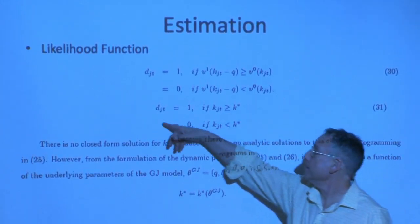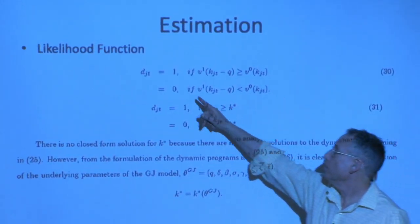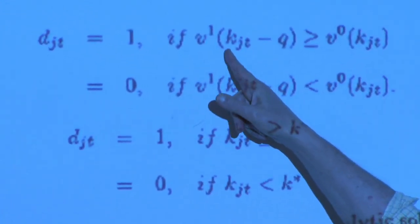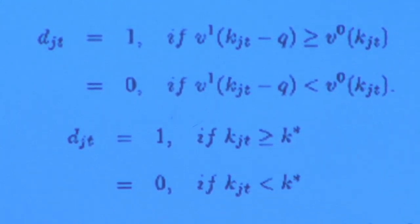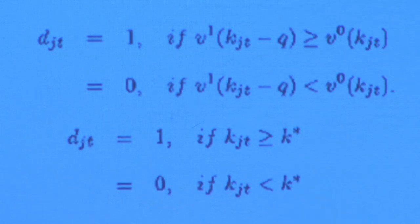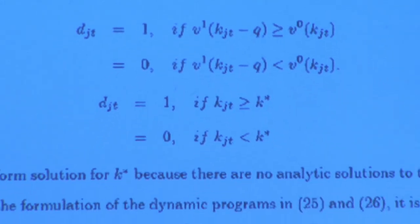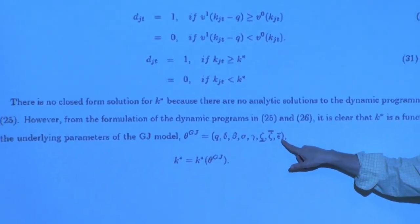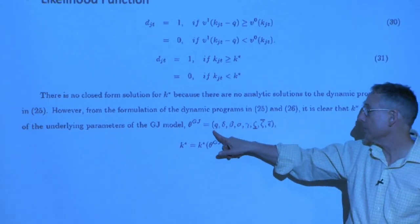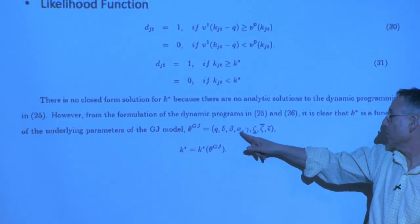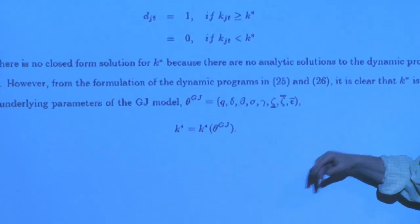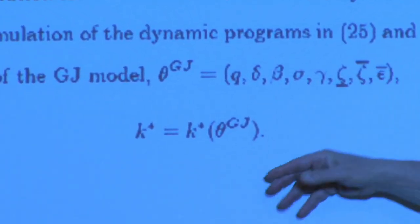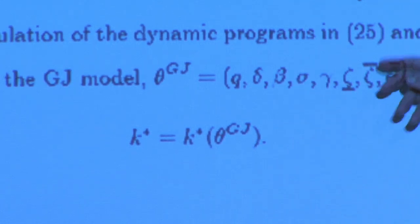For the discrete choice: you're going to enter or not enter depending on whether your value of participating is higher than not participating. The model at those parameters gives you k-star — in the example it was 15. In general, k-star depends on all the listed parameters: the fixed cost, discount rate, risk aversion, the wedge in intermediation, the upper and lower bounds on the distributions. All of those things determine k-star, which in turn determines whether, at a given wealth, you choose to enter or not.